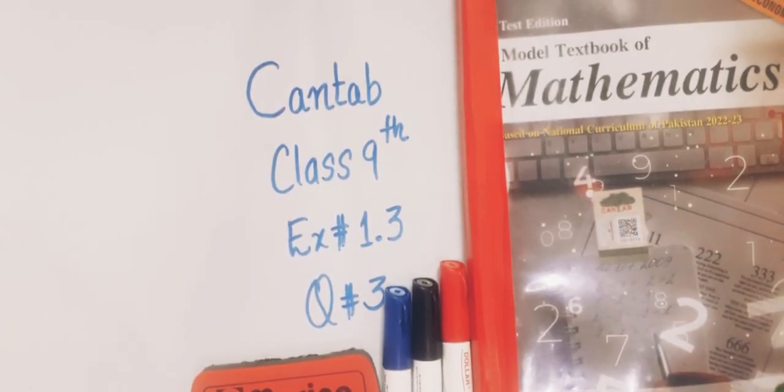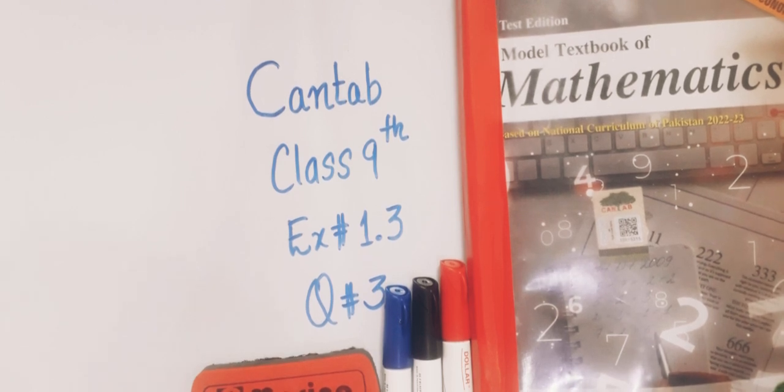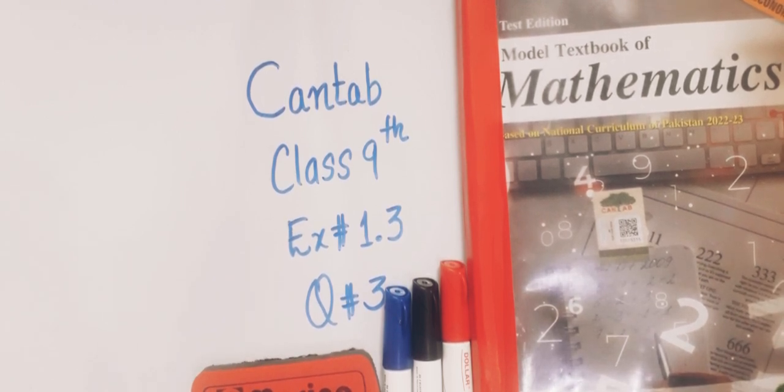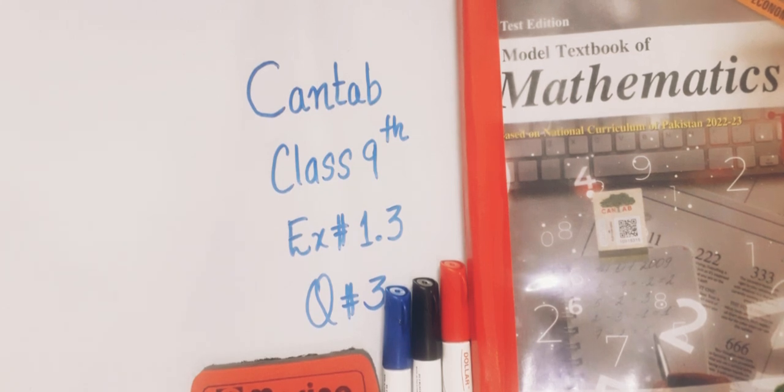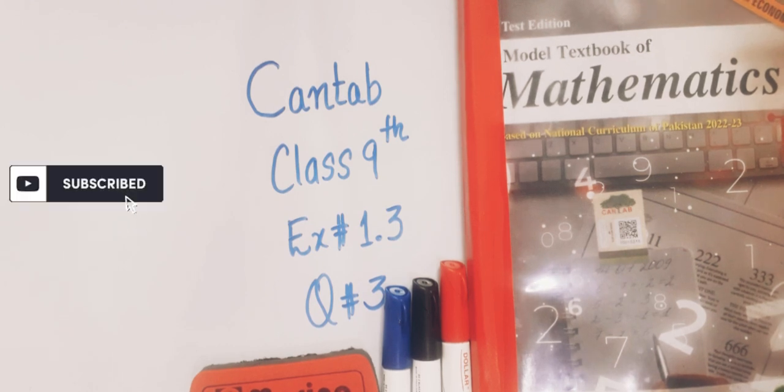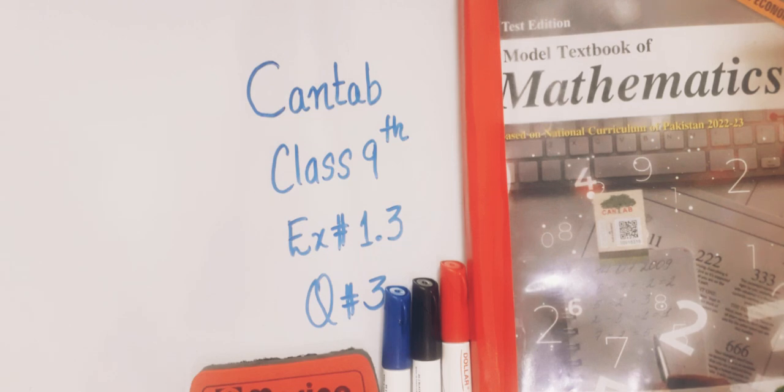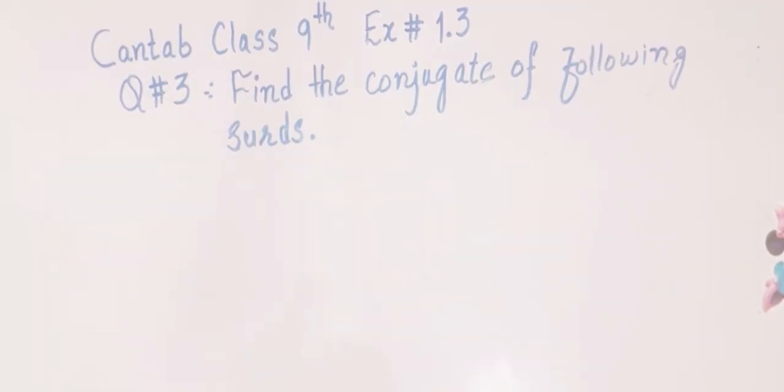Bismillahirrahmanirrahim, assalamu alaikum. Welcome back to Math Solver. Today we will solve Exercise 1.3 from Cantab Class 9th, question number 3. If you have not subscribed to Math Solver, kindly subscribe to our YouTube channel and press the bell icon to get notifications of all upcoming videos. Now we will start question number three. Question number three is find the conjugate of the following surds.